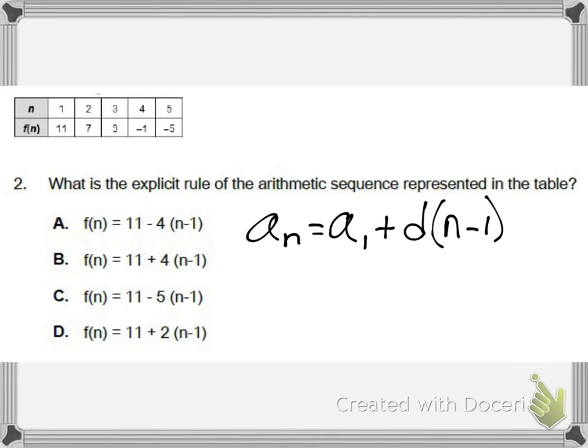Number two, what is the explicit rule of the arithmetic sequence represented in the table? The arithmetic explicit rule formula has been listed right here. a sub n equals a sub one plus d times n minus one. You simply need to plug in the correct variables where they need to go. And a sub one, your first term, that is eleven. You can see that right in the table where n equals one, f of n equals eleven. And then the difference, as you go from eleven to seven, you are taking away four. From seven to three, you're taking away four. So that's why the value for D, the common difference, is subtracting by four. And then the n minus one part always stays the same. Choice A is representing that function.